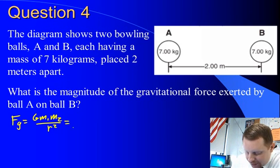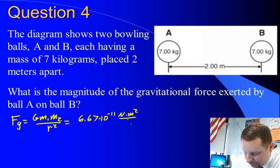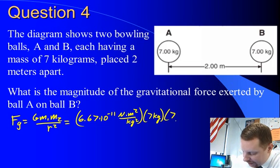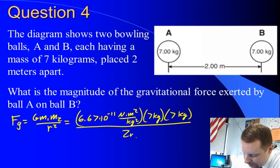6.67 times 10 to the minus 11 Newton meters squared per kilogram squared, times the mass of the first ball, 7 kg, the mass of the second ball, 7 kg, over the square of the distance between them, 2 meters squared.